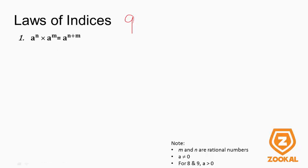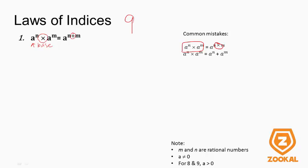The first law: A to the power of M times A to the power of N equals A to the power of M plus N. This involves multiplication of two terms with the same base A but different powers. When you multiply them together, you add the powers. A common mistake students make is multiplying the powers together instead of adding them. Another mistake is confusing this with addition: A to the power of M plus A to the power of M, which is wrong. Please take note of these mistakes.